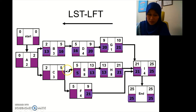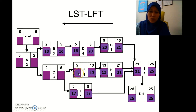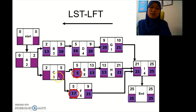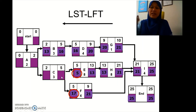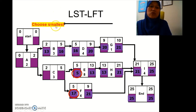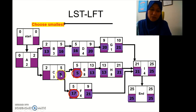For the second row: 21 minus 8 is 13, bring 13 here. 13 minus 8 is 5. We stop here first because there are two inputs going here. Let's finish the other branch: 21 minus 4 is 17. Now we have 5 and 17 to choose from. When going backward, we choose the smallest number, which is 5. So 5 minus 3 is 2.